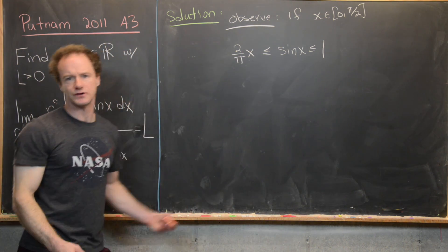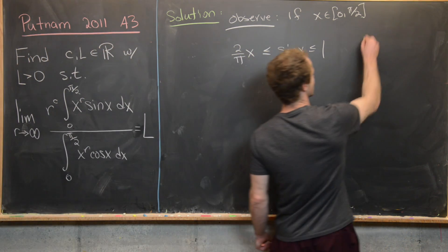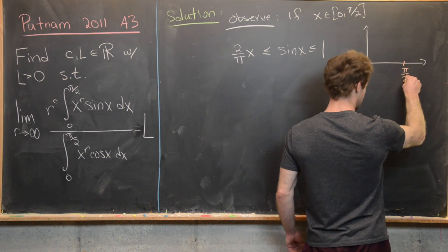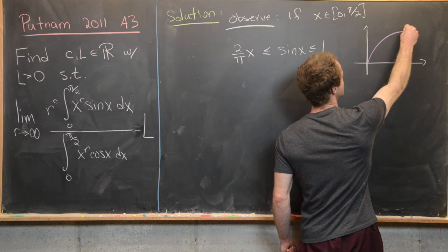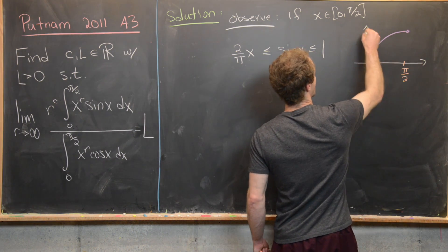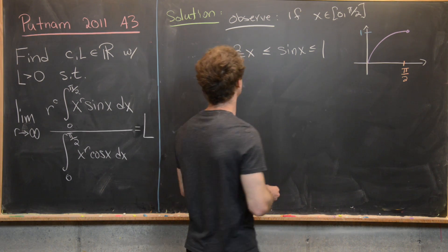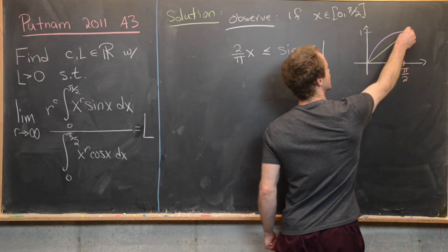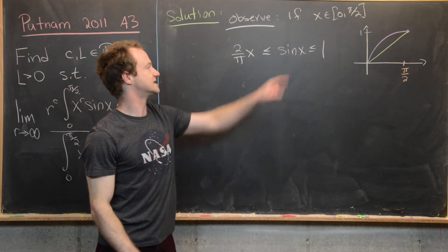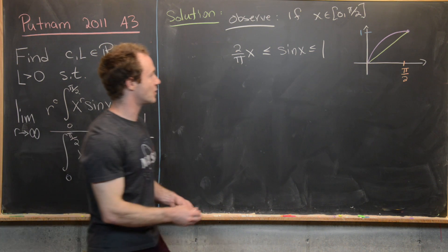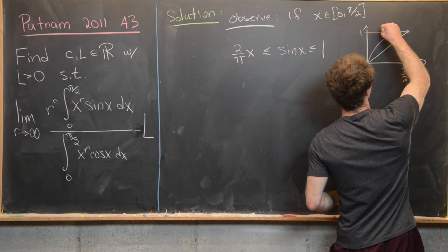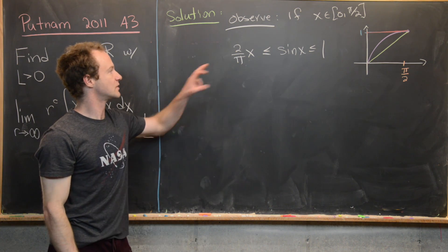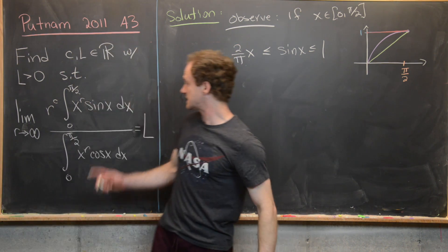Furthermore, on [0, π/2], sine x is bigger than or equal to the linear function (2/π)x. You can check this using first-semester calculus. Graphically, the sine function has a nice arc up to (π/2, 1), while (2/π)x is a line with slope 2/π below it, and y = 1 is the horizontal line at the top. This gives us the inequality (2/π)x ≤ sin(x) ≤ 1.